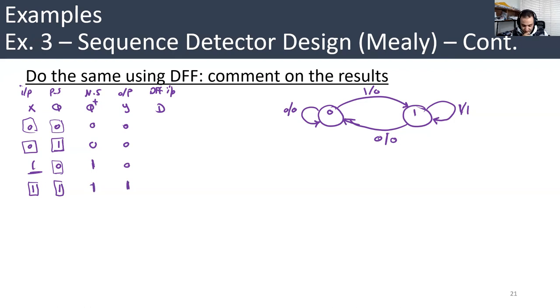Now for the D, it's really easy. Just look at Q+ and copy and paste it here because it's a transparent latch. Whenever the clock edge comes, D will be transferred to Q+. So that means D must be equal to these values in the Q+ column. So here we have 0, 0, 1, 1. When the clock edge comes and D is 0, Q+ will be 0 and so on. That's the advantage of using D flip-flop. It makes your analysis really easy.